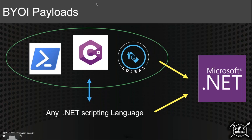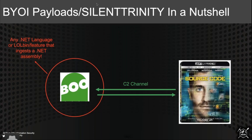We're basically taking Boolang and embedding it into any .NET language. PowerShell, for example, is a .NET language, so you can take Boolang — or really any third-party .NET scripting language — and embed it into PowerShell. Same thing with C#. And it's not only limited to .NET languages; you can embed it into any LOLbin — Living Off the Land Binary — or any feature in Windows that ingests a .NET assembly. Really anything in Windows that interacts with the .NET framework could probably execute any .NET payload.